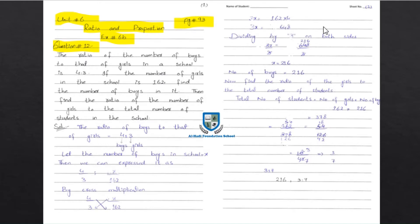Dividing by 3 on both sides: 3x divided by 3 equals 648 divided by 3. Since 3 × 2 = 6 and 3 × 1 = 3, we get 3 × 6 = 18, so x is equal to 216. The number of boys is 216.